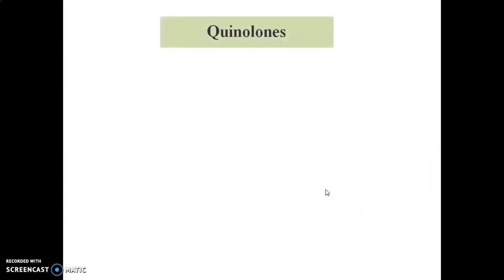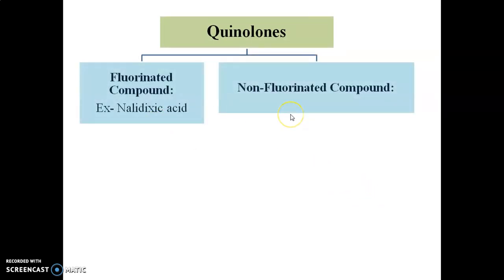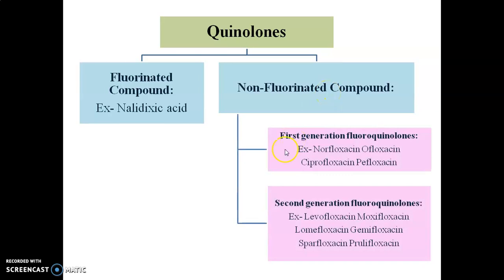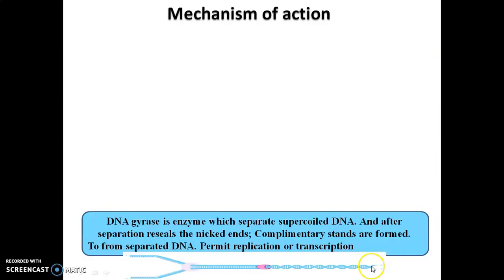What is the classification? Quinolone derivatives are classified into two groups: non-fluorinated compounds, example nalidixic acid, and fluorinated compounds, which are further classified into first-generation fluoroquinolones — norfloxacin, ofloxacin, ciprofloxacin — and second-generation fluoroquinolones — levofloxacin, moxifloxacin and other derivatives.